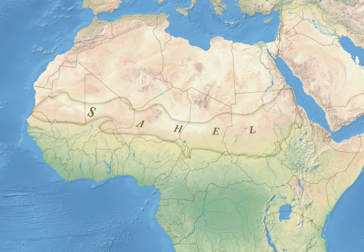Around 4000 BC, the climate of the Sahara and the Sahel started to become drier at an exceedingly fast pace. This climate change caused lakes and rivers to shrink rather significantly and caused increasing desertification. This, in turn, decreased the amount of land conducive to settlements and caused migrations of farming communities to the more humid climate of West Africa.